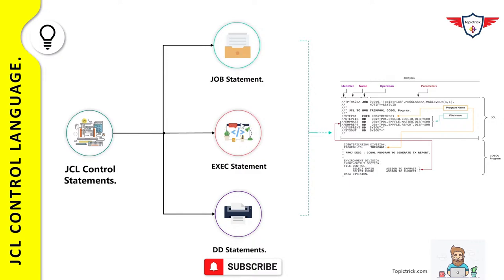Every job must contain a minimum of two types of control statements: a job card to specify job-specific information, and an execute statement to provide the name of the program or utility to invoke. DD statements are optional and only required if your program or utility uses any dataset.